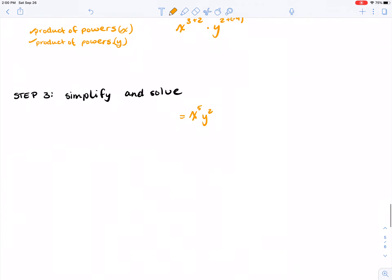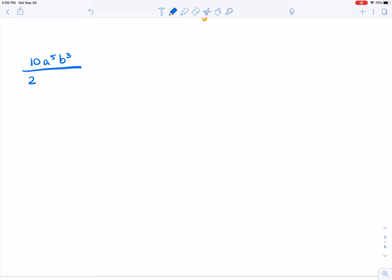Let's take a look at another example. For this example we have a coefficient of 10 a to the 5 b cubed, all divided by a coefficient of 2 a squared b to the minus 5.